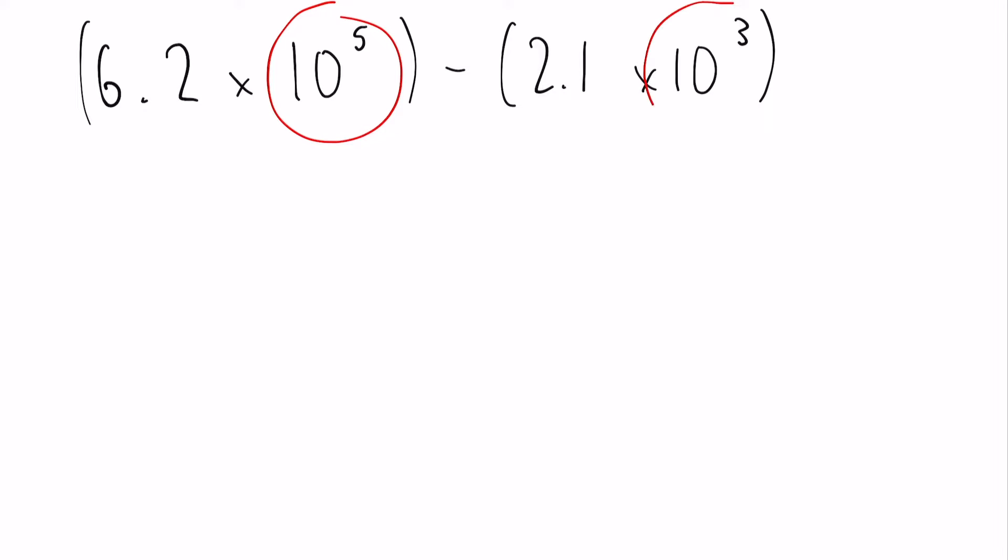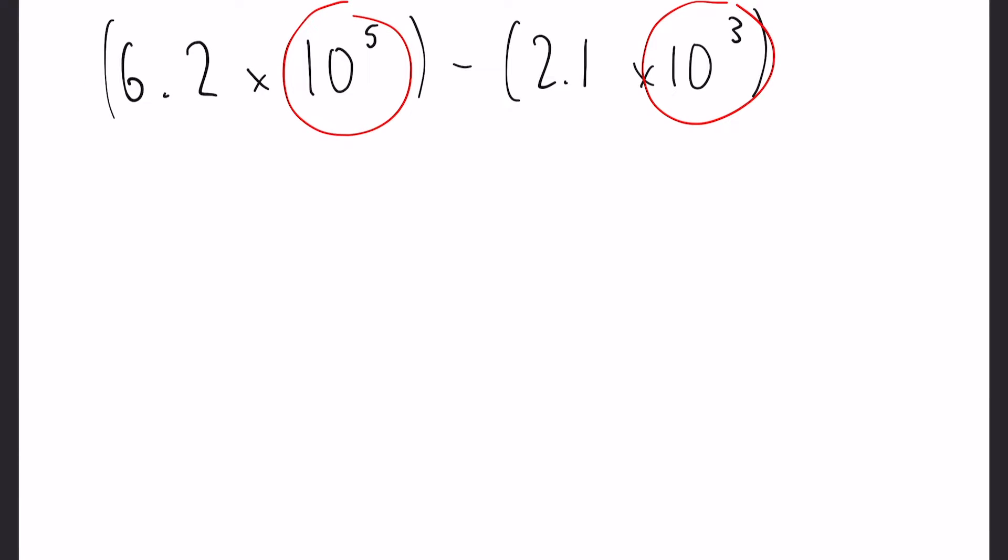So here we have 10 to the 5 and 10 to the 3. As I said before, we have to have both the powers to be the same. Now it doesn't matter how you do this. We could make the 10 to the 3 go upwards to 10 to the 5, or we could make them both 10 to the power of 3 instead. I tend to find that bringing the powers down is a lot easier, and you'll see why in a minute.